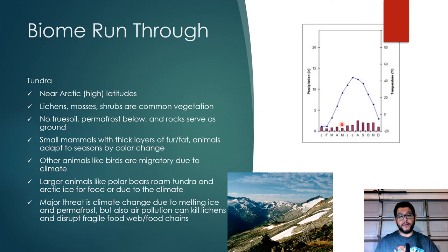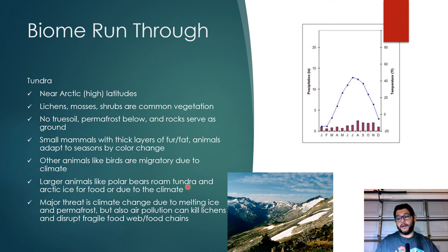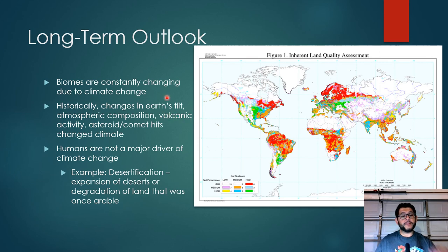The tundra consists of mountainous areas with small lichens and plants. It's very cold, full of permafrost, with no real true soil — rock serves as the ground — meaning very few nutrients. Animals include small mammals with thick fur and fat layers, and larger animals like polar bears that roam wide areas to find food or fishing near glaciers. Main threats are climate change causing melting ice and permafrost, and air pollution that harms lichens and disrupts the fragile food web.